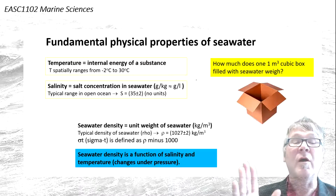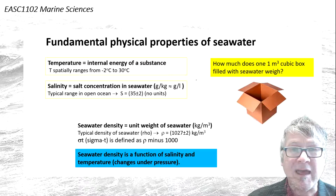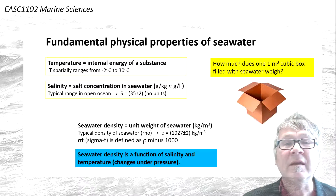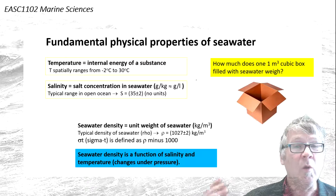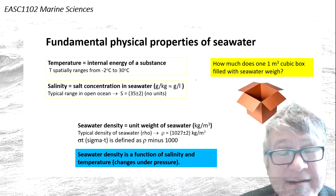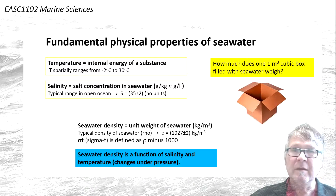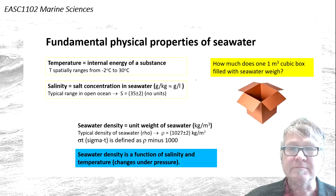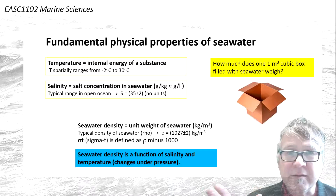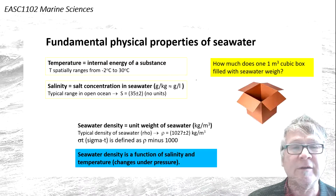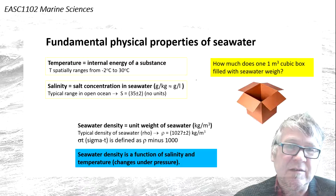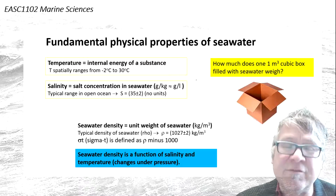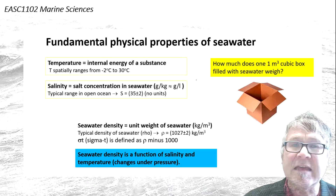The density of water — how heavy the water is — depends on salinity and temperature, which determine the weight of a unit volume. In addition, pressure also changes the density. If you move water from 1000 meters to 4000 meters depth, the increased pressure compresses the water and increases the density.